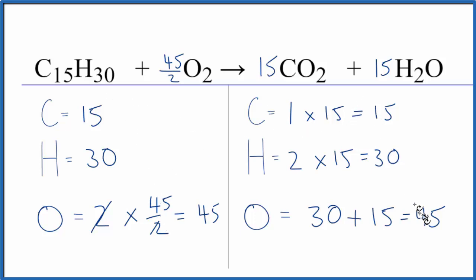Everything's the same on each side. The only problem with this is that some teachers don't like having a fraction here. We can get everything to be a whole number just by multiplying the whole equation by 2. So 2 times the 1, that gives us 2. 2 times 45 over 2. The 2's cancel out. We have 45, just like down here.